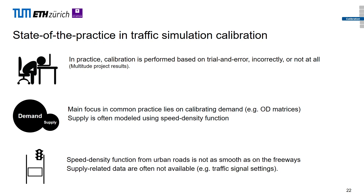Another challenge is that calibration is mathematically highly underdetermined and very complicated to solve. Many unknowns come from the demand side — thousands of ODs for a city — while on the supply side it is often modeled by a speed-density function for 10 to 20 edge types. This approach originates from calibrating freeway models, but in urban networks we don't have a smooth speed-density function. Additionally, we often lack detailed information about traffic signal algorithms, and implementing them is quite challenging.